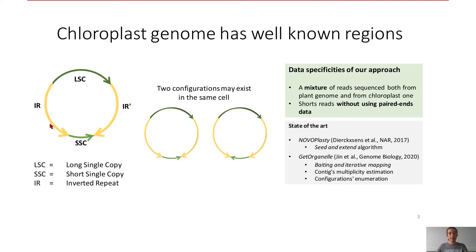But it exists directed repeats. Because of these repeats, and we know thanks to biological publications, that the two configurations may exist in the same cell. What are these two configurations? Here you can see that we can invert the short single copy and the solutions are equivalent.